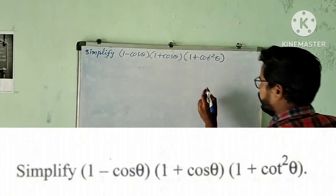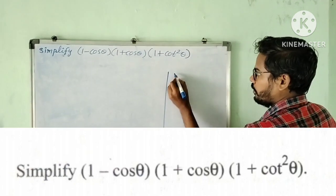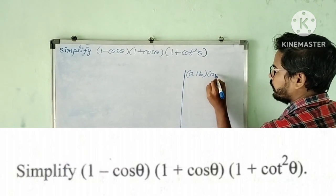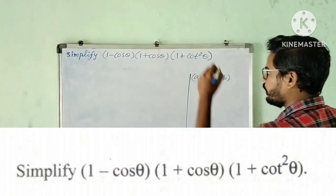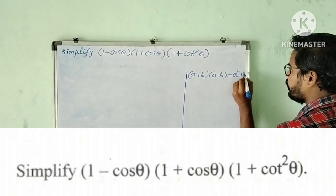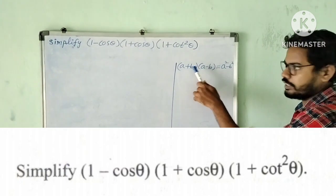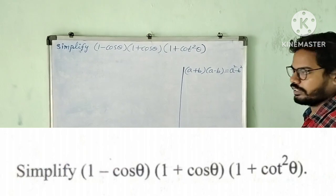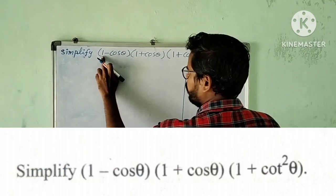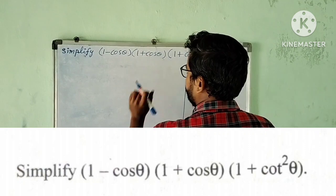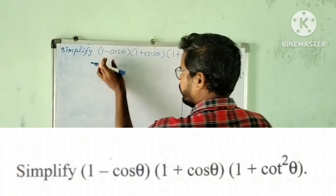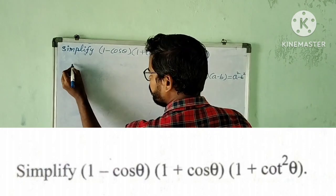This is like a plus b into a minus b, or a minus b into a plus b. This is an identity: a squared minus b squared. So a plus b into a minus b equals a squared minus b squared. I am going to apply the same identity here: a minus b into a plus b gives a squared minus b squared.